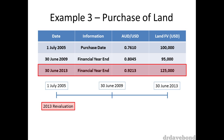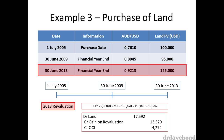When the revaluation occurs on the 30 June 2013, both the US dollar land value and the Australian dollar have increased to $125,000 and 0.9213 respectively. This provides an Aussie fair value of the land of $135,678, which is an increase of $17,592. As this is an increment reversing a previous decrement, the first $13,320 can be taken through as a gain in profit or loss, which reverses the prior loss, whilst the remaining $4,272 is taken through OCI.